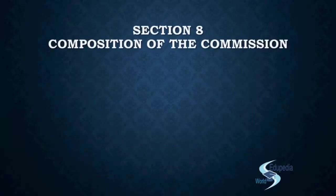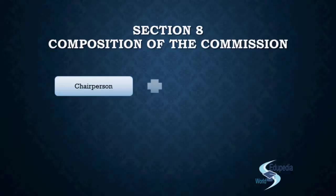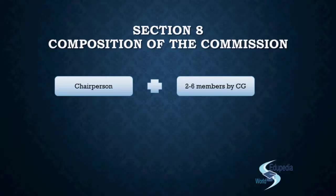Section 8 deals with the composition of the Commission. The Competition Commission will have one Chairperson and not less than two and not more than six members. Both the members and the Chairperson will be appointed by the Central Government. So there will be one Chairman and minimum two members — if required they can extend up to six members.